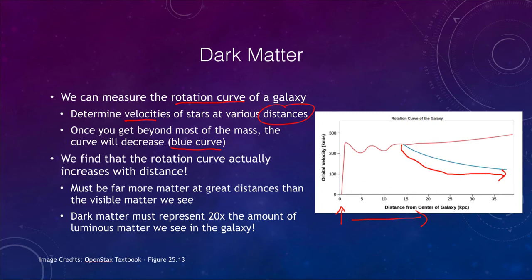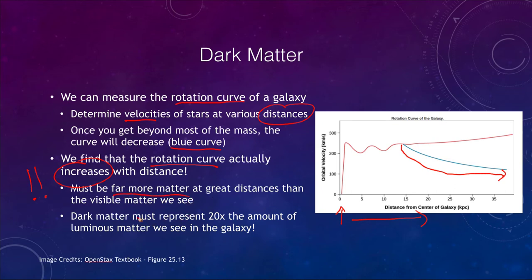This works very well for our solar system, which shows something similar: essentially all the mass is in the Sun, so the planets show a very decreasing velocity as you go further out. However, what we find in galaxies is that instead of decreasing, the further out we go, the rotation curve actually increases with distance — stars are going faster and faster — meaning there must be far more matter at greater distances than any visible matter we see.